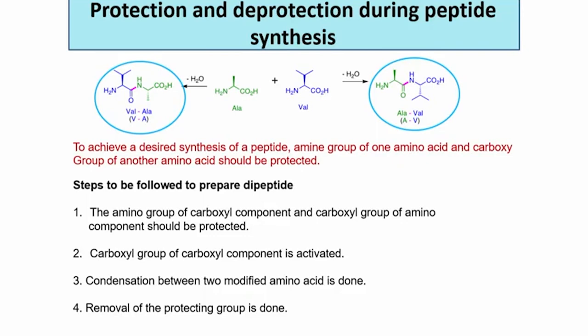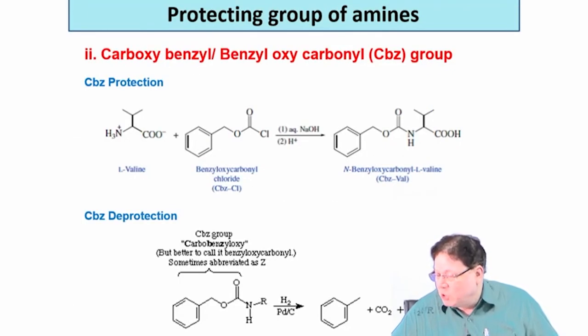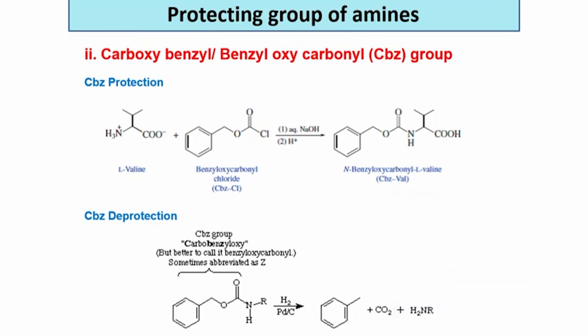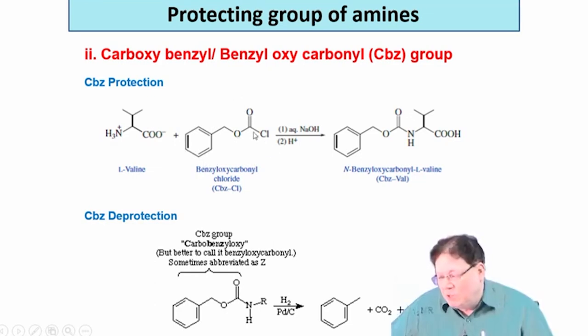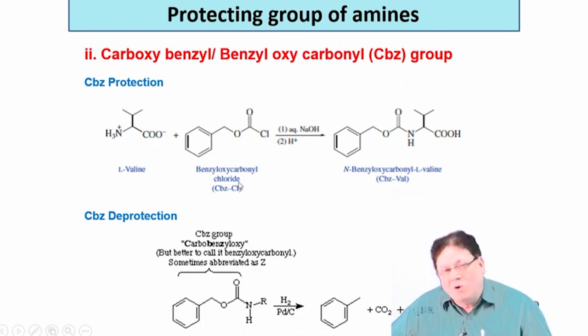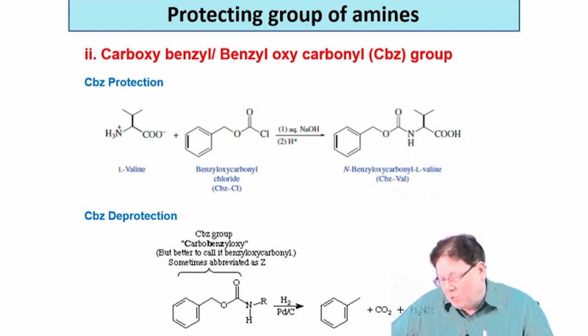Next - these are the deprotection methods, but I did not say how to introduce these groups. There are some slides I can show you here. It is shown that to put the CBZ group, you take the amino acid - shown here as valine - and you take what is called benzyl oxycarbonyl chloride. This is the ester of chloroformic acid. Formic acid is HCOOH and you just replace the hydrogen with chlorine, so that is the ester of chloroformic acid. This is also known as benzyl chloroformate.